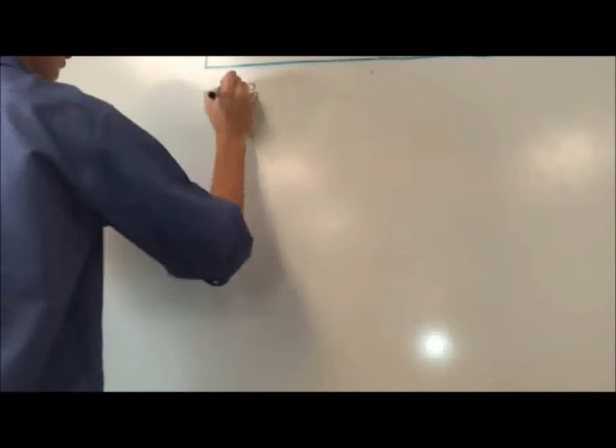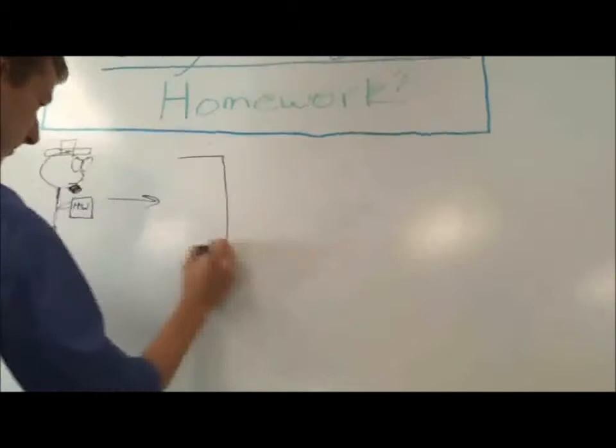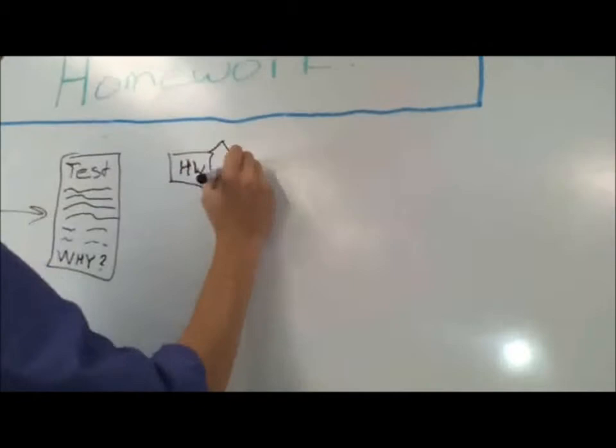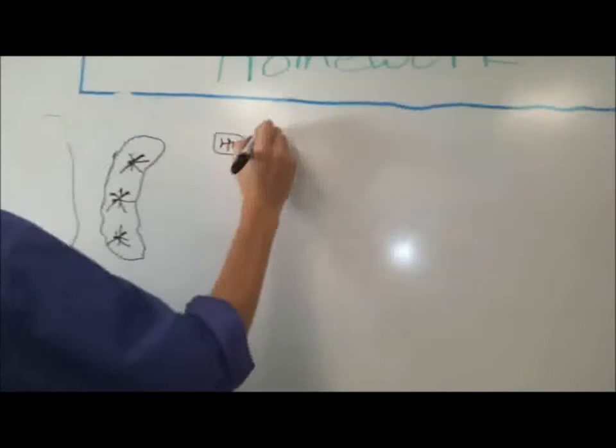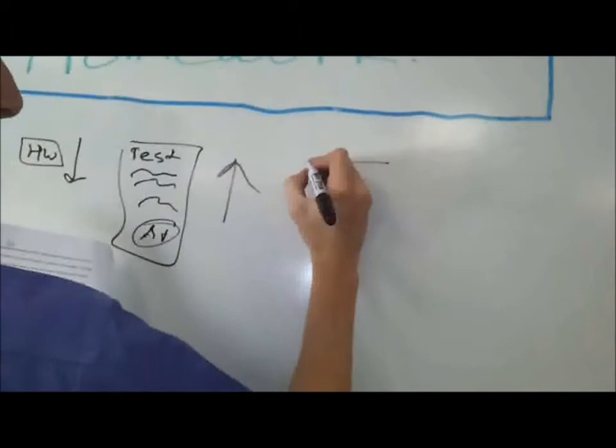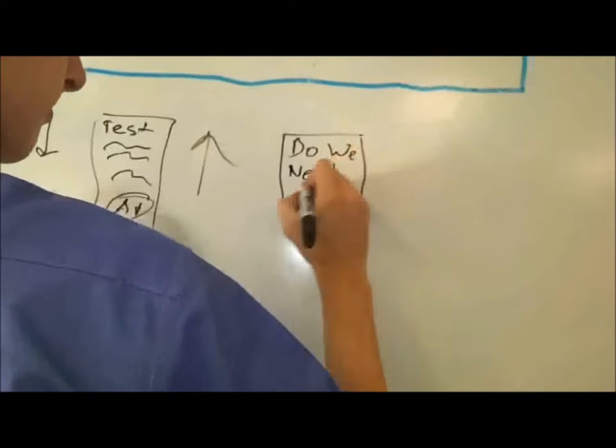One excuse teachers use about giving homework is that it helps prepare students for tests. But in reality, why are there tests? Are tests really an accurate measure of a student's knowledge? According to some educators, too much homework can actually lead to lower test scores. Countries such as Japan, the Czech Republic, and Denmark assign less homework than most countries and have test scores that are well above the international average. American students actually do more homework than most countries and still only score around the international average.